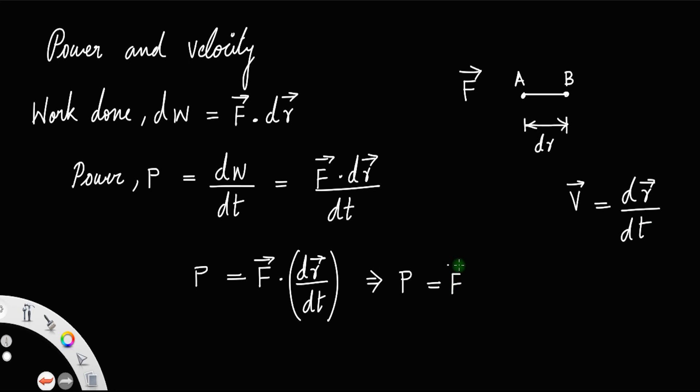Power P equals F dot dR/dt, which is velocity, so F dot v. Power will always be the dot product of force and the velocity of the body.